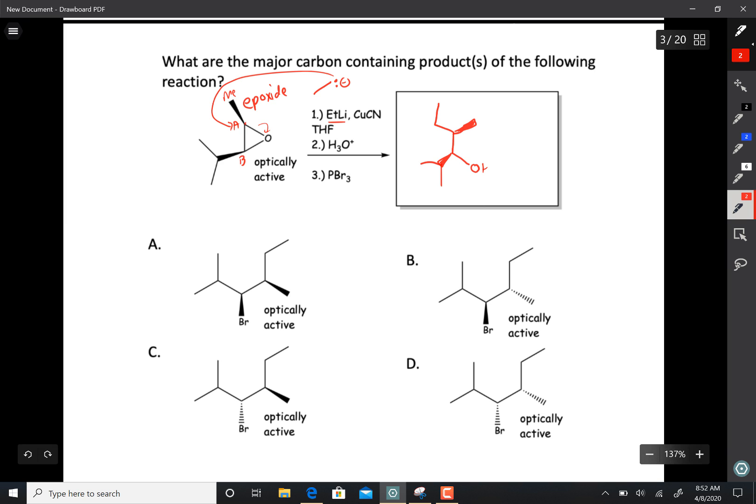H3O+ protonates it. This is still optically active—that's after steps one and two. Now PBr3 takes the OH and replaces it with a Br, and it does so by an SN2 reaction. Since it's an SN2 reaction, you end up inverting the chiral center.